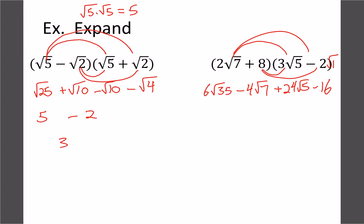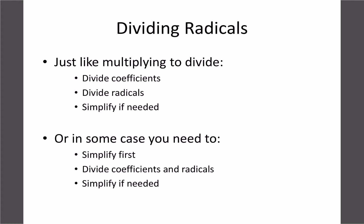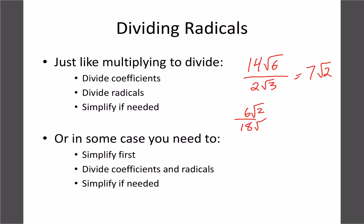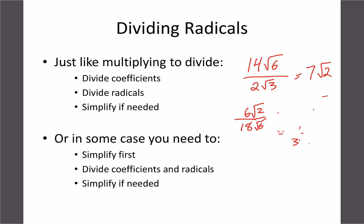Now let's look at dividing. The rules are essentially the same as multiplying but in reverse — we divide the numbers. For example, 14 root 6 divided by 2 root 3: divide the regular numbers to get 7, divide the root numbers to get root 2. If division doesn't come out evenly, like 6 root 2 over 18 root 6, treat them like fractions: 6 over 18 is 1/3, and root 2 over root 6 is root(1/3), giving 1/3 root(1/3) or 1 over 3 root 3. We'll explore rationalizing more next week. The first rule is: divide the numbers if you can, even as fractions.